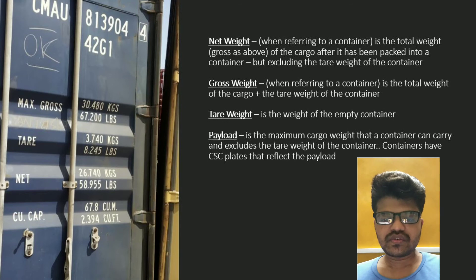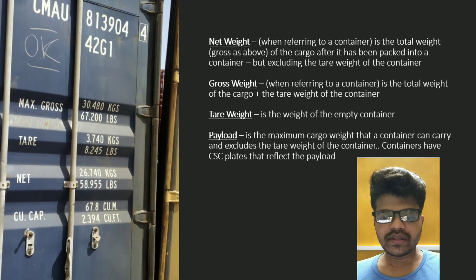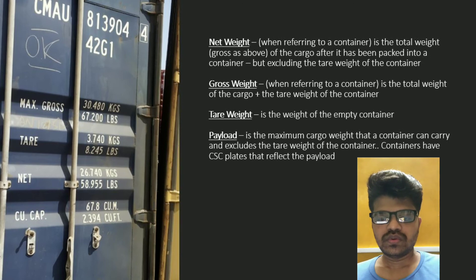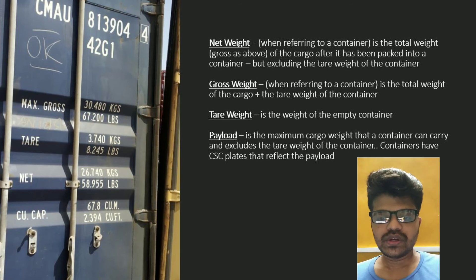As you can see in the image of the container door side, there is one more entry after net weight — that is cubic capacity. Cubic capacity means the capacity of the container in terms of cube, that is volume. The volume you can see is 67.8 cubic meters, and in cubic feet it is 2,394 cubic feet.